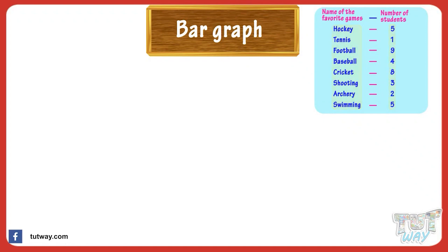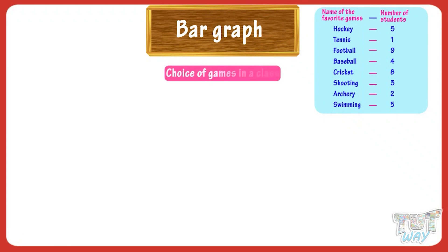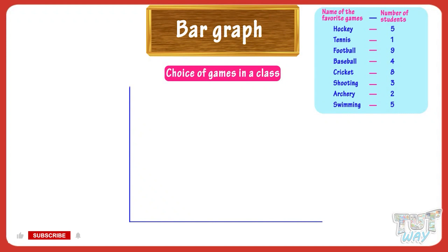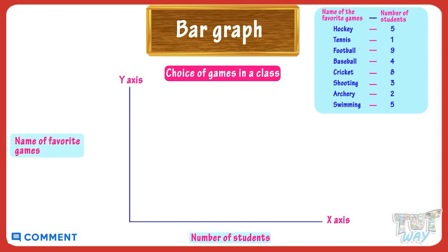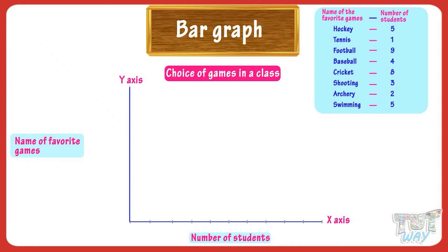First of all, we can give a title to our chart — it can be 'Choice of Games in a Class.' We can give titles to each axis: let the x-axis represent the number of students, and let the y-axis represent the name of the favorite game. Since the number of students ranges from 1 to 9, let the scale be numbered 1 to 10.